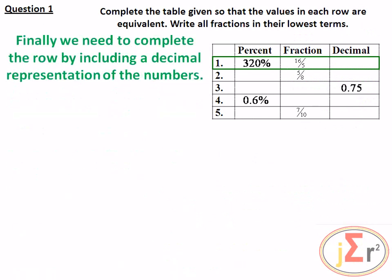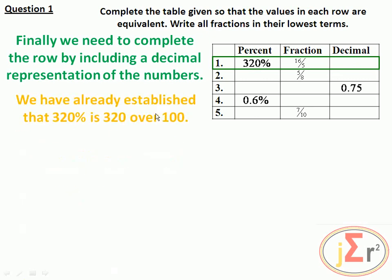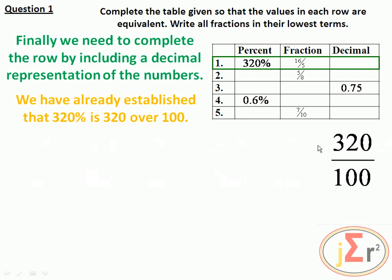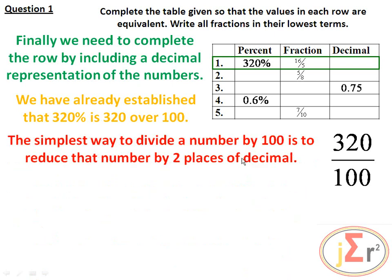We need to complete the row by including a decimal representation. We started with the percentage and converted it to a vulgar fraction. Now we are converting it to a decimal fraction. We have already established that 320% equals 320 over 100.